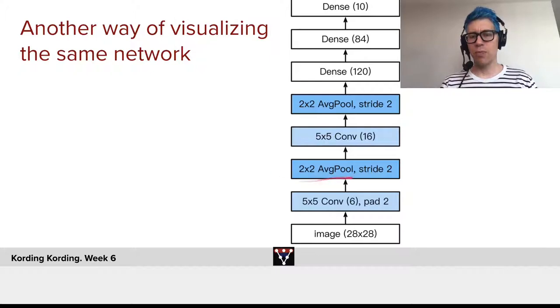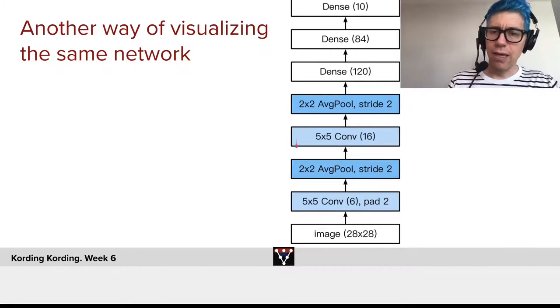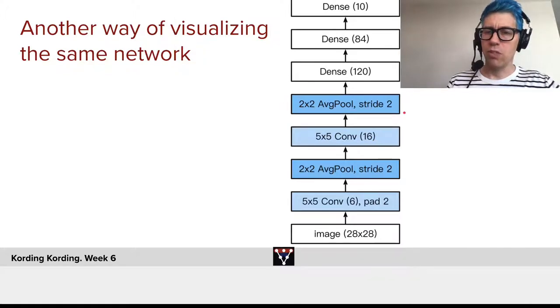Now, like, this isn't max pool, here's average pool. Another way of doing it, similar results. Okay? 5 by 5 convolution here, 16 channels now. Another average pool.